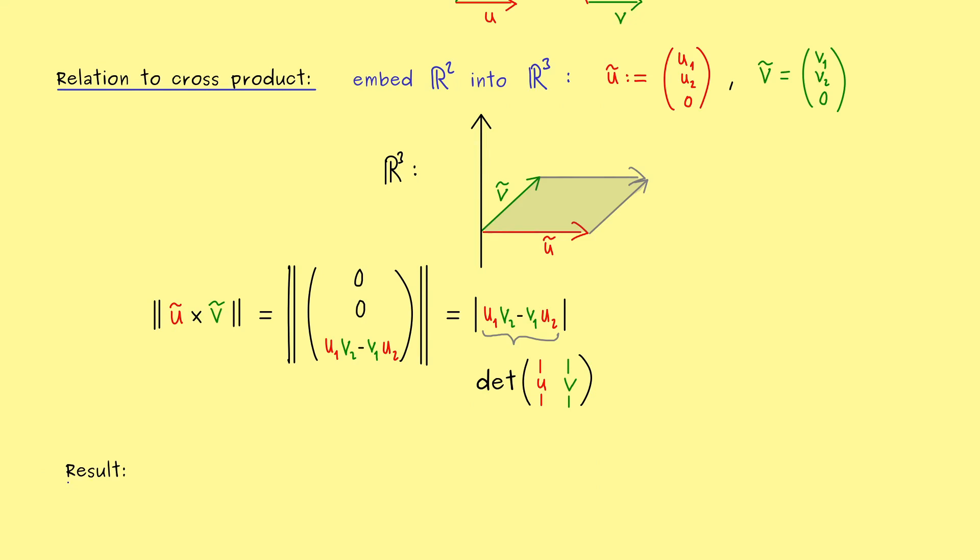So this is definitely a result we should write down. So you could say this is the main result of the video today. The two-dimensional volume function is described by the determinant function. We just have to write the vectors in the columns of a matrix. So in other words, now you can remember the determinant is exactly the volume function. And indeed we could prove that by using what we already know from the cross product in R³.